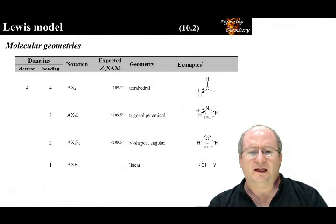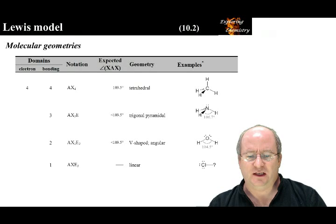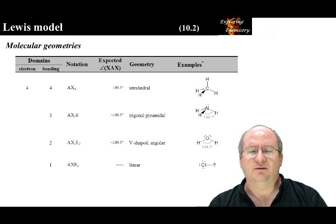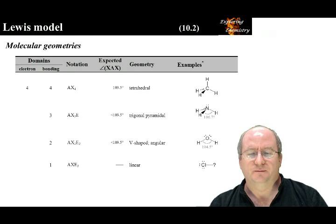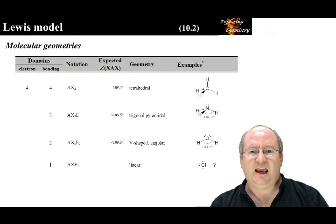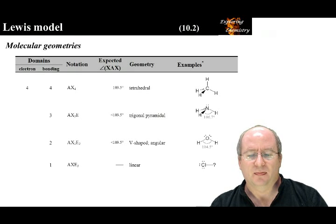With four electron domains, the parent geometry is tetrahedral. Methane, with four identical bonding domains, has the ideal bond angle of 109.5 degrees. Ammonia has one non-bonding domain, and the H-N-H bond angle is less than the ideal bond angle — this geometry is called trigonal pyramidal. Water has two non-bonding domains; the H-O-H bond angle deviates more from the ideal bond angle because of the two non-bonding domains. This geometry is also called V-shaped or angular.